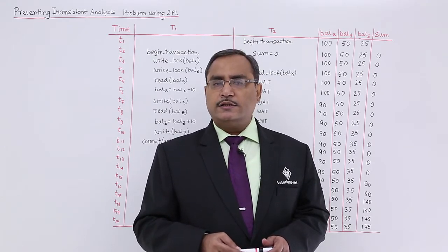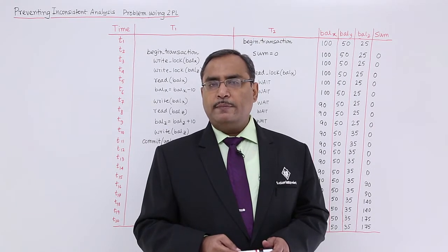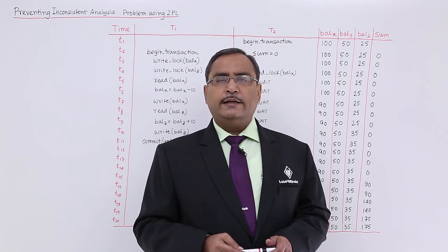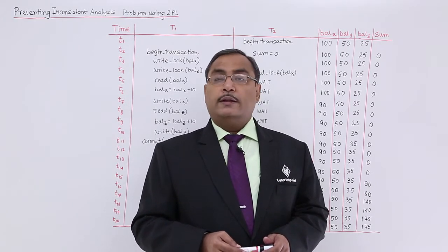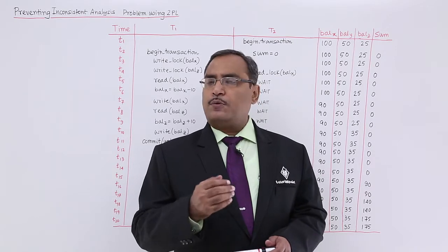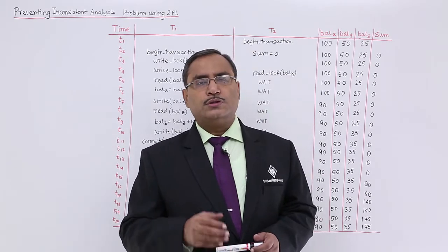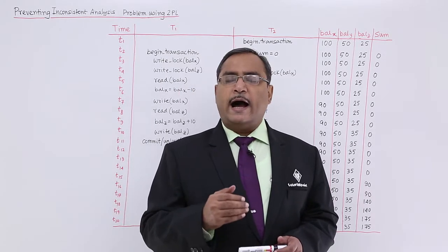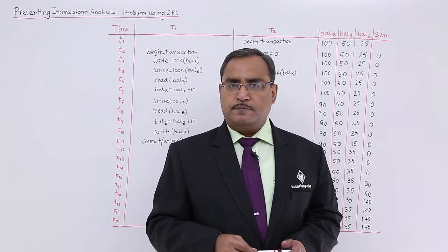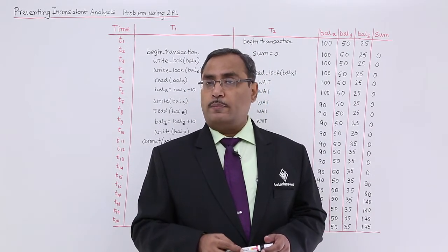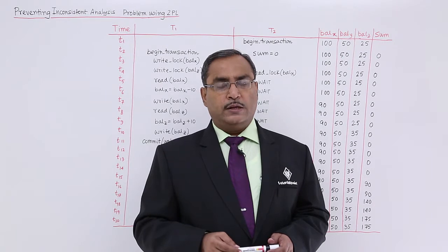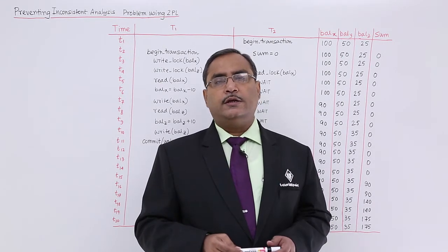We shall discuss the inconsistent analysis problem and how this particular problem can be prevented using Two-Phase Locking (2PL). In case of inconsistent analysis problem, there will be two concurrent transactions. One transaction will do some data processing and another transaction will do some updates on those data items which are being processed by the other transaction in the data processing, and that will produce one inconsistency problem. The problem will be prevented and solved using 2PL, and we're going to discuss it through one example.